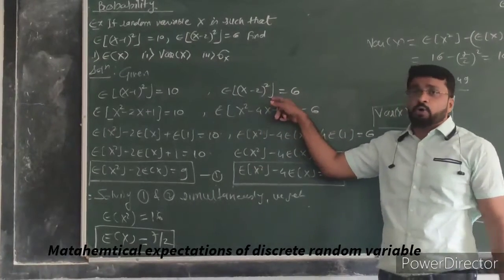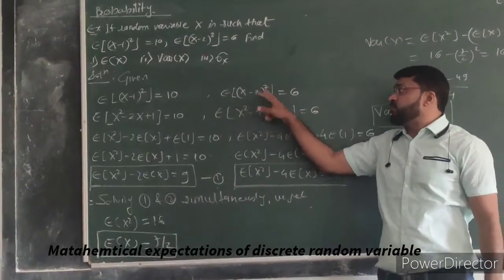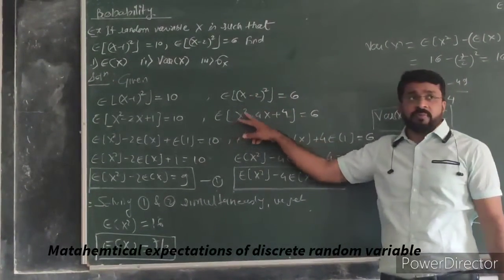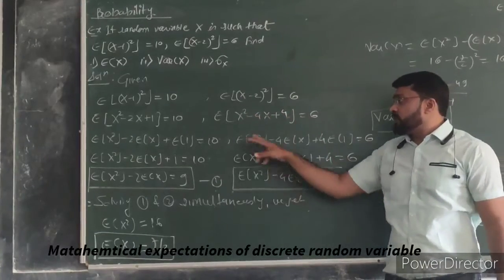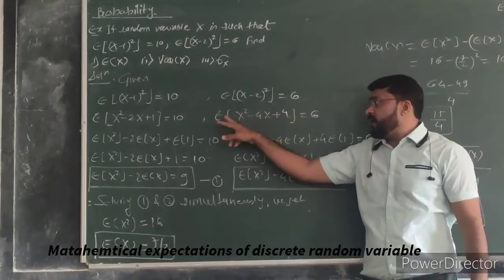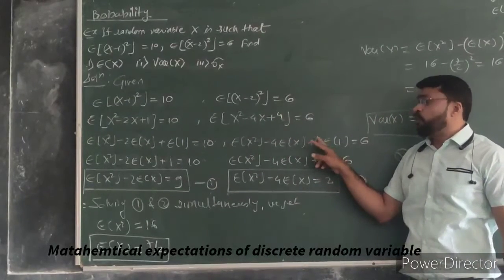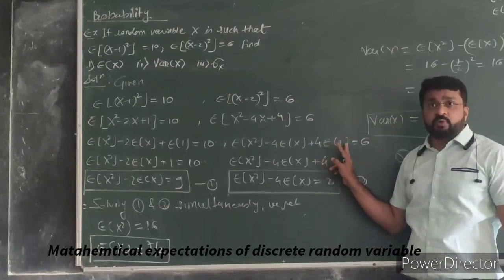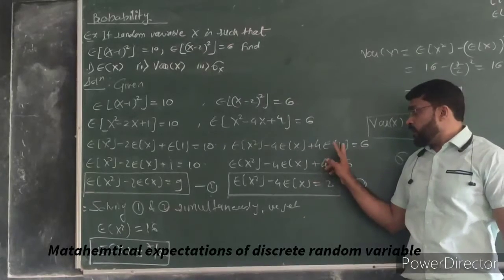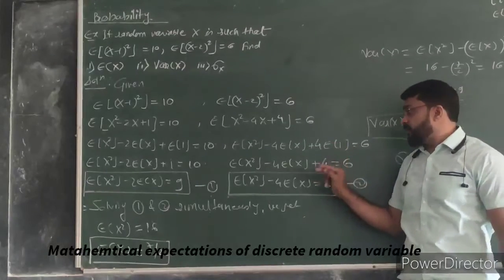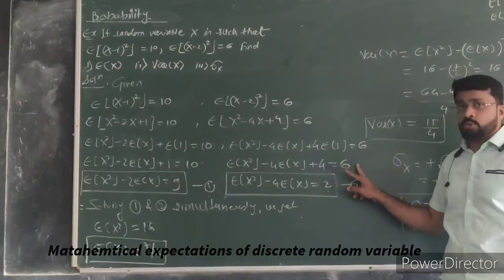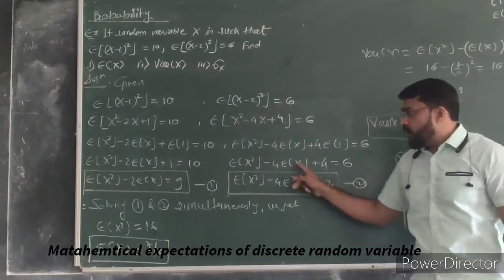Similarly, the second equation is here. We will simplify it. (X minus 2) whole square, that is X² minus 4X plus 4. This is E(X²) minus 4E(X) plus 4E(1). E(1) is 1, then 4 goes here. 6 minus 4 is 2. This is 2 here.